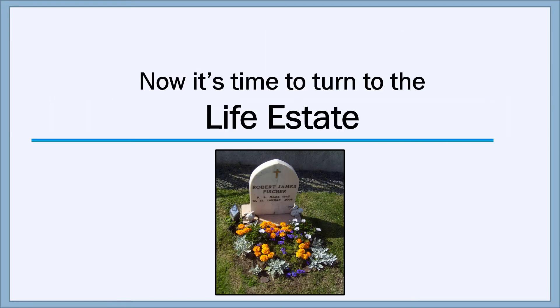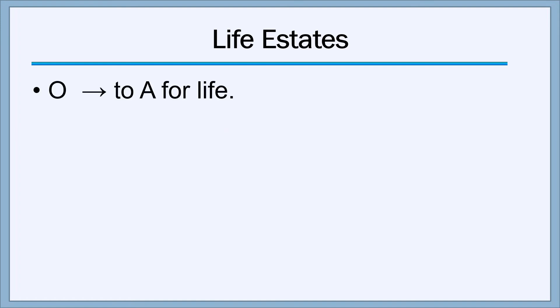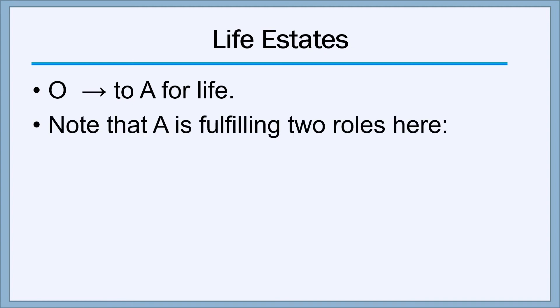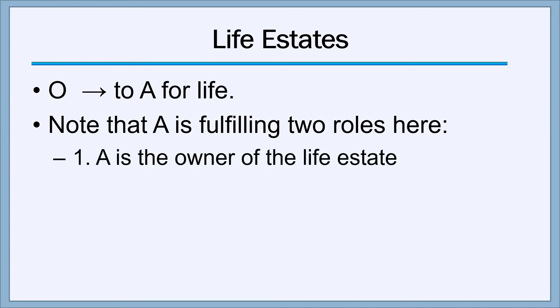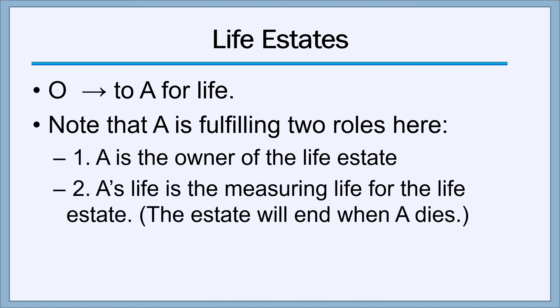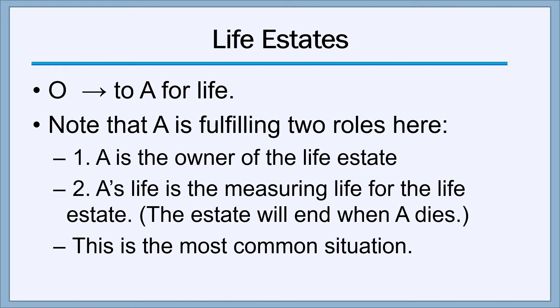That completes our discussion of the fee tail estate, and now it's time to turn to the other main topic of this video: the life estate. The principle of the life estate is that the property will remain in someone's ownership, but only as long as they're alive. The standard language is simply that O, the owner of the property, makes a deed or a will that says 'I convey this property to A for life.' Notice that in this situation, A is fulfilling two different roles: A is the owner of the life estate, and A's life is the measuring life for the life estate. The estate will end when A dies, so A is both the owner and the measuring life.